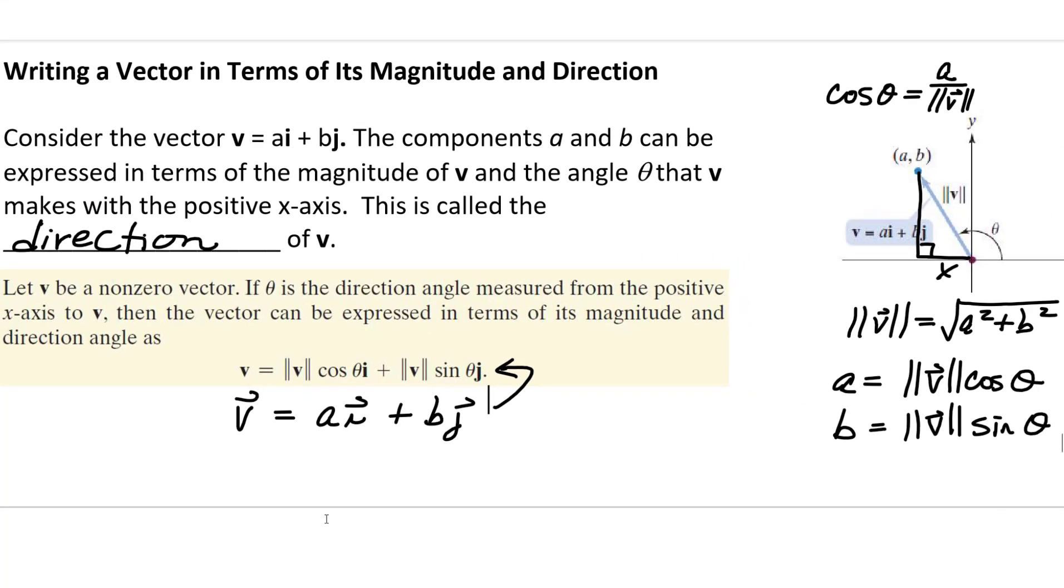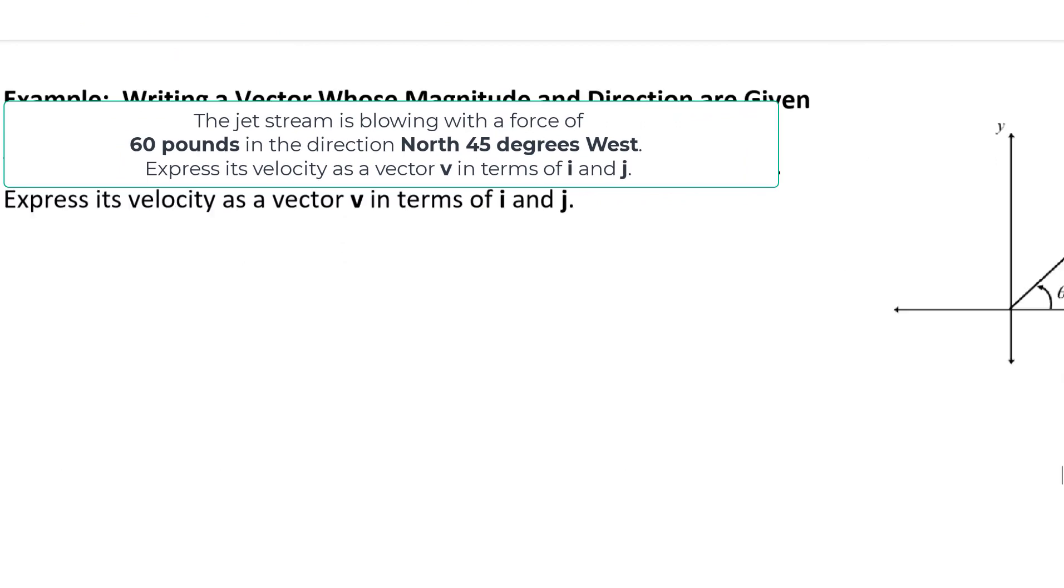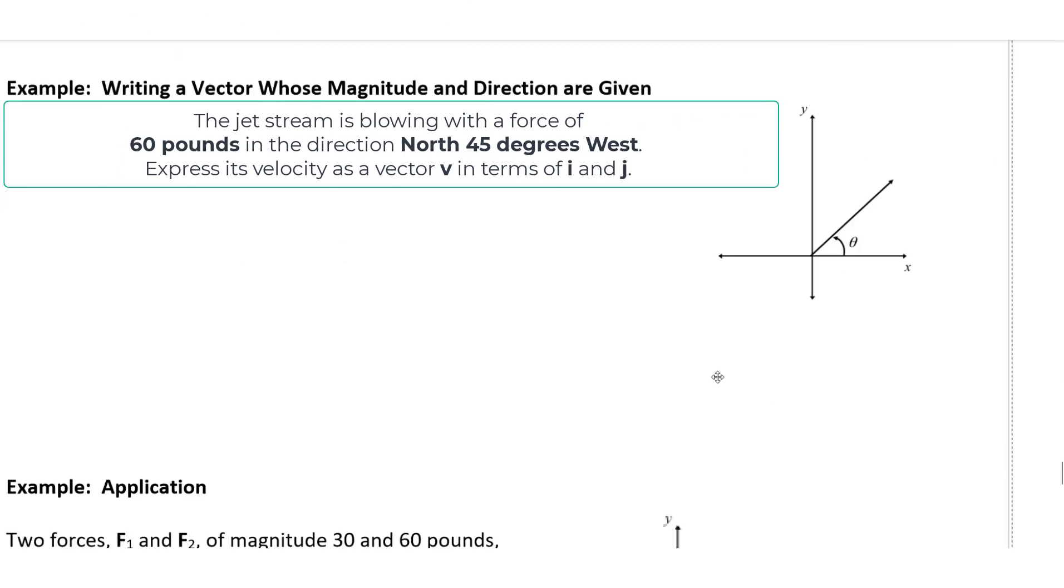One of the situations where this relationship is useful is when we're given the angle and the magnitude of a vector, but we don't know the coordinates of the terminal point. For example, the jet stream is blowing with a force of 60 pounds in the direction north 45 degrees east. Express its velocity as a vector v in terms of i and j.